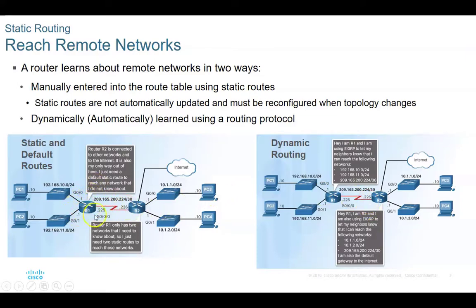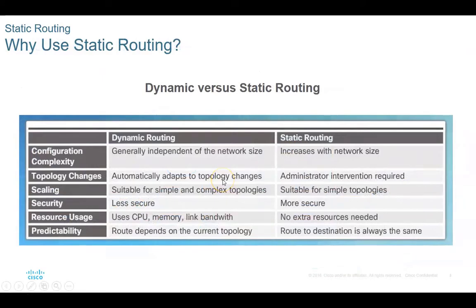Static routing is simply saying: I put an IP address on here — which could be the default gateway — set it up, and then I have to tell this router what my route is. They're both talking to each other, but not like dynamic where routers are constantly talking back and forth. The drawback for a static route is that it increases complexity as network size increases, whereas dynamic routing is generally independent of network size — no matter how big the network becomes, routers will learn from each other.